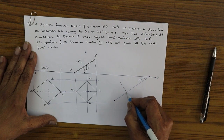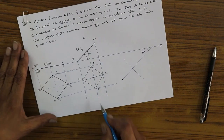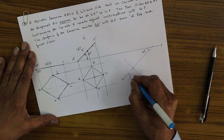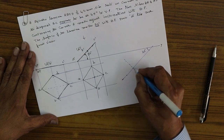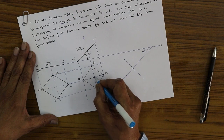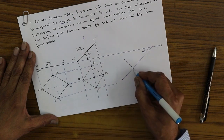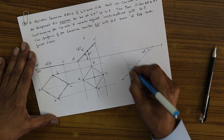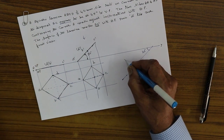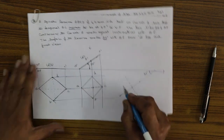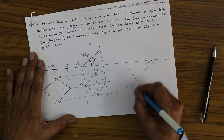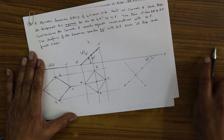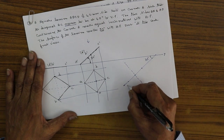Draw a perpendicular here. Measure the distance A and C and mark the distances here for A and C. Measure the distance B and D and mark here for B and then D. Join them in order — this is A, B, C, and D.